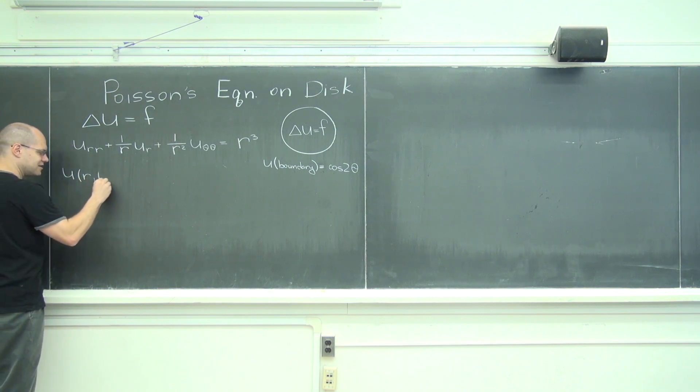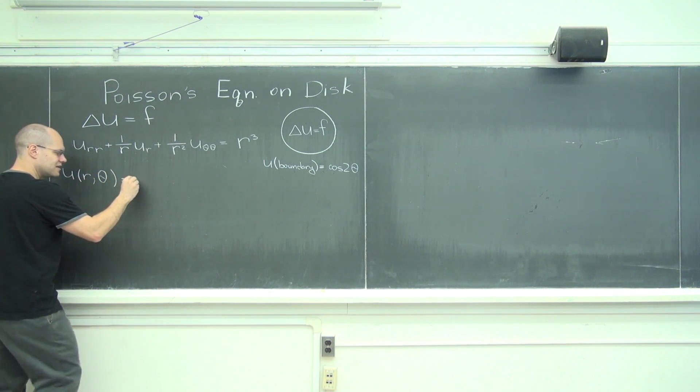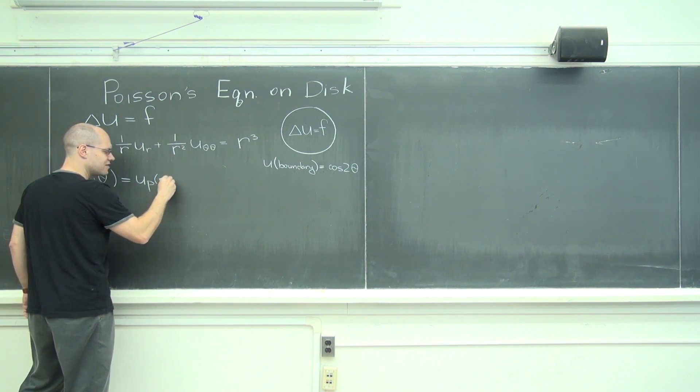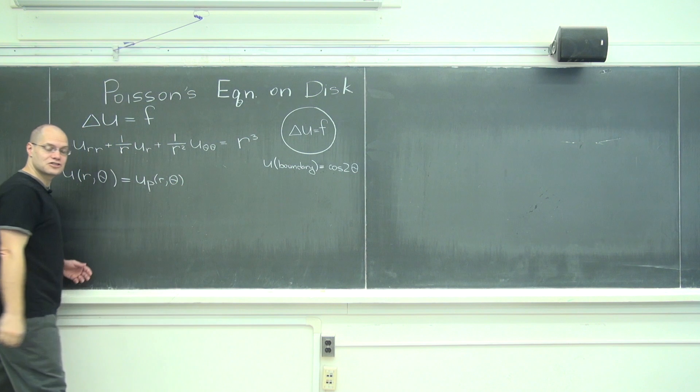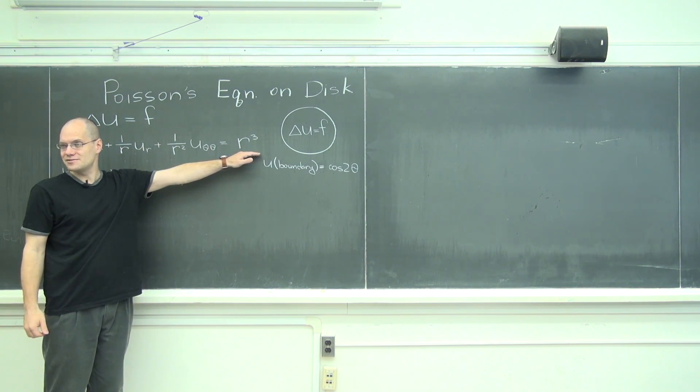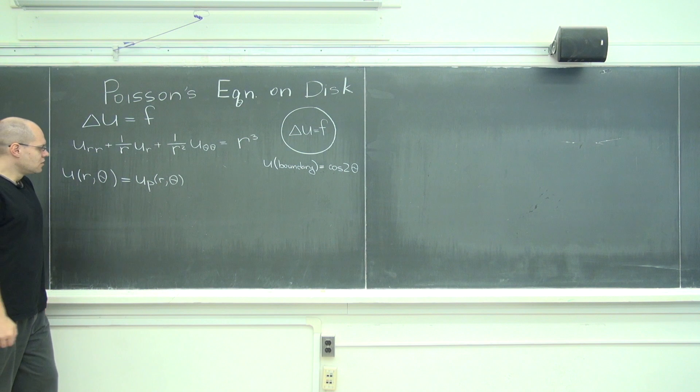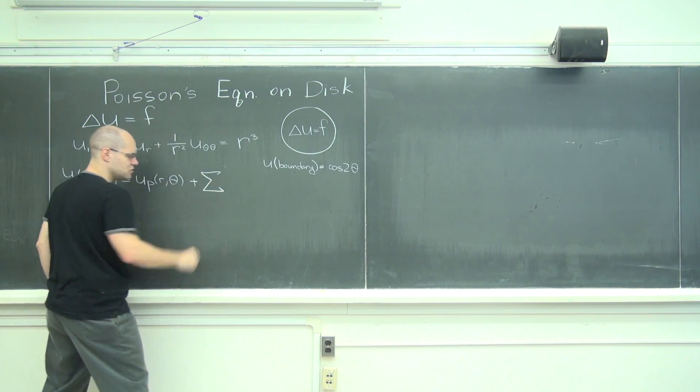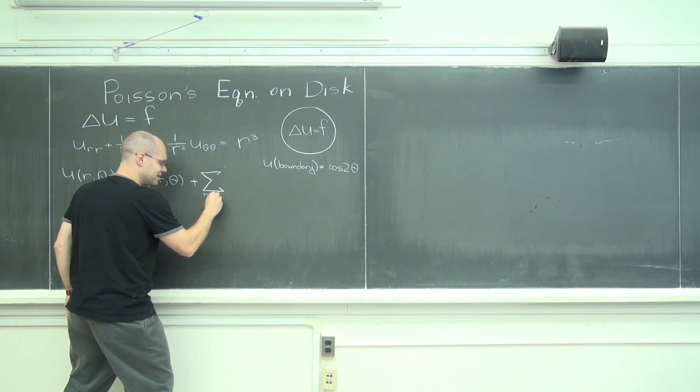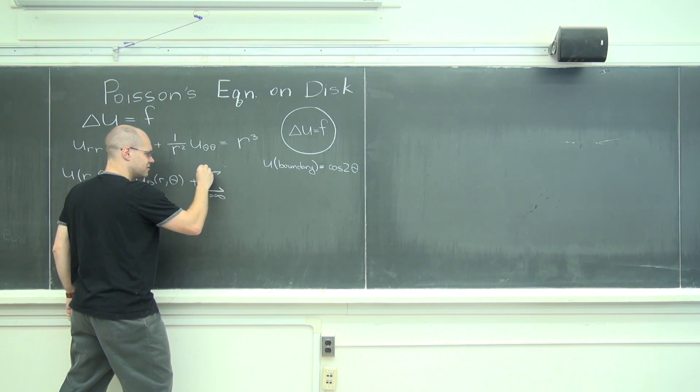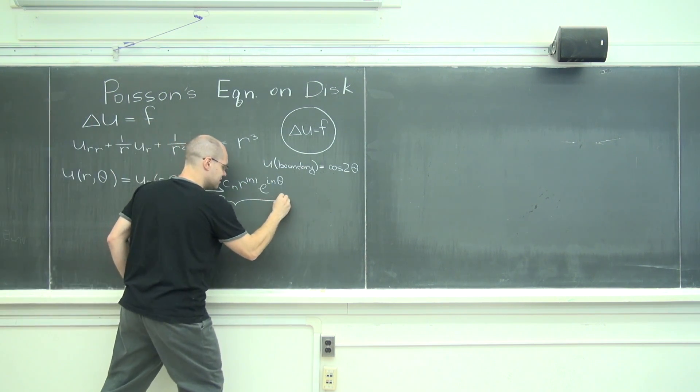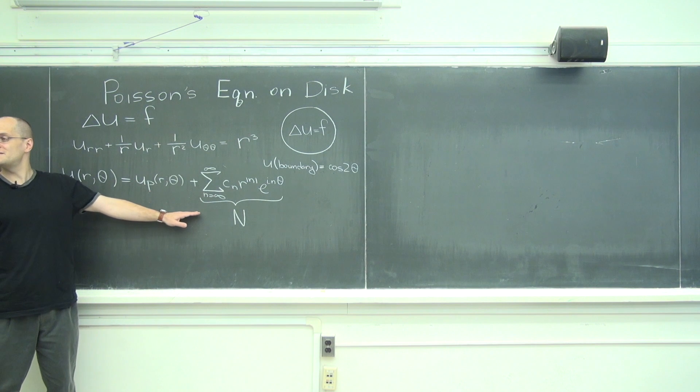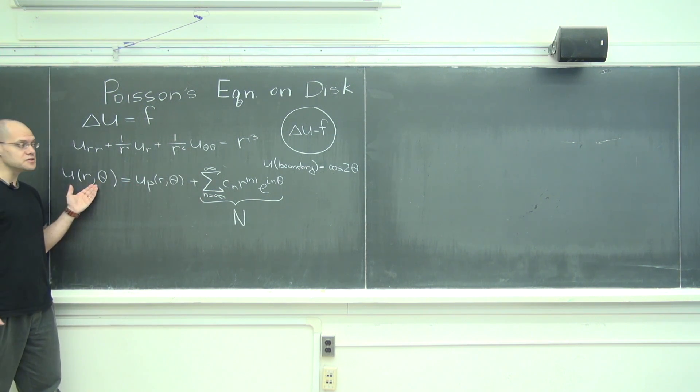So basically the whole solution, just to summarize what I just said in an equation, will look like this: u_particular, I'll write that it's a function of R and theta even though it will be only a function of R, but that's only in this very special case, plus the null space which is the summation from n, well let's stick to complex numbers, the null space.